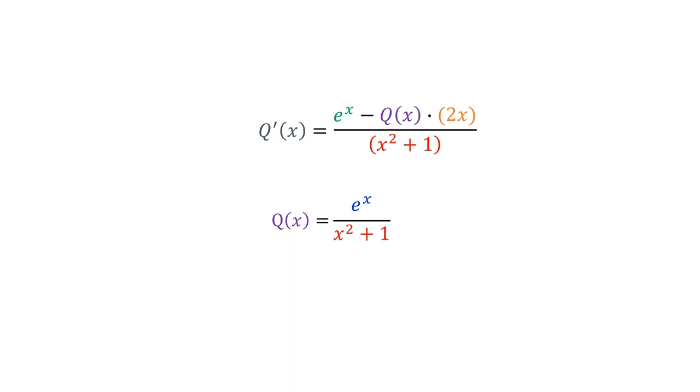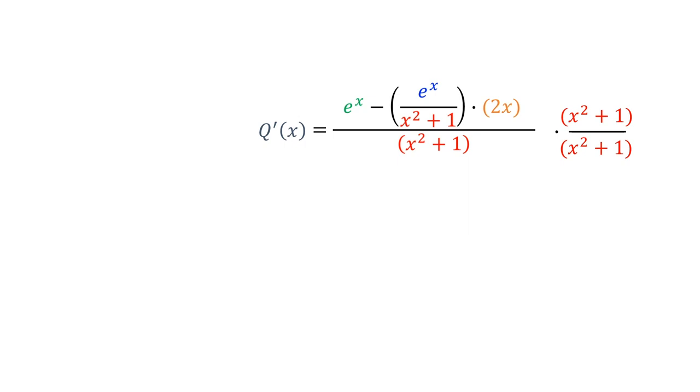And we have a formula for q of x, so let me make some room here. And now we can substitute the formula for q of x. And this looks a little complicated and maybe not too familiar, but I'm going to do something that might seem like a bit of a trick. I'm going to multiply this fraction by x squared plus 1 over x squared plus 1.